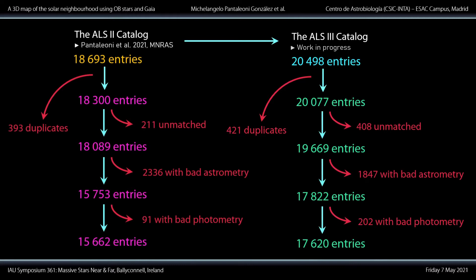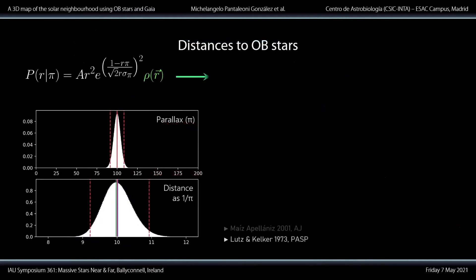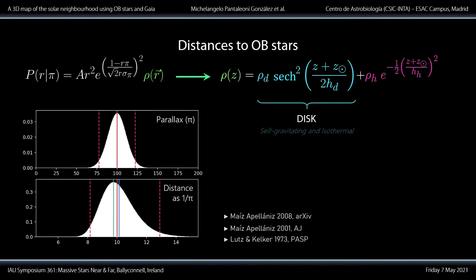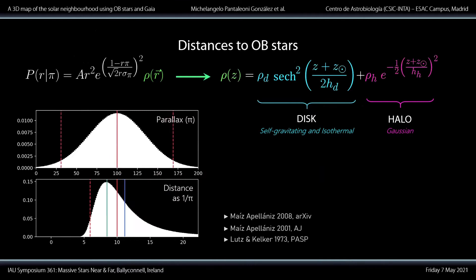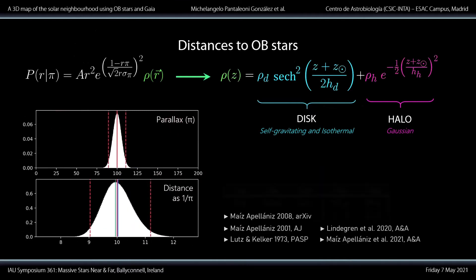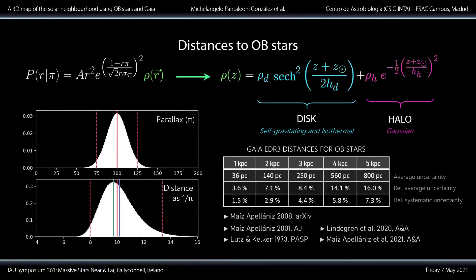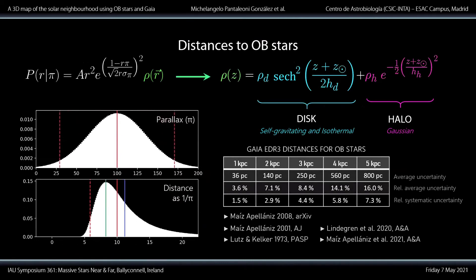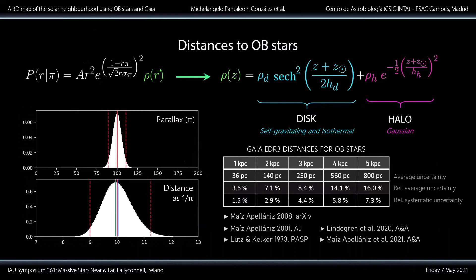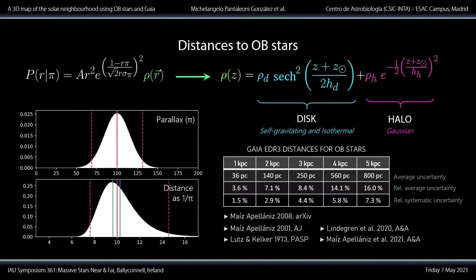Gaia EDR3 has allowed for a 25 percent decrease in the uncertainties of our distance estimates, which is a huge improvement in the quality of the 3D map of the solar neighborhood. To calculate distances, we account for the zero-point parallax bias in EDR3. There is this problematic bias discovered by Lutz and Kelker in the 70s, which says that if we assume a normal distribution for the parallax and naively invert it, we get a skewed, asymmetric bell-shaped curve for the distances.